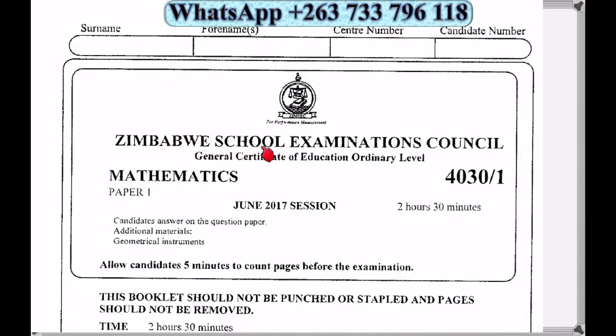The Zimbabwe School Examination Council General Certificate of Education Ordinary Level Mathematics Paper 1, June 2017 session. The time is 2 hours 30 minutes. Here is an important notice: this booklet should not be punched or stapled, and pages should not be removed. We must take note of that. Let's get into the paper and start from number 1.